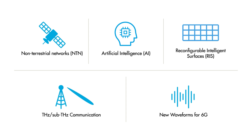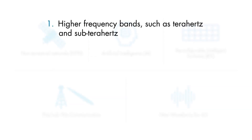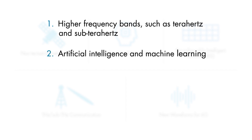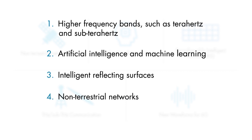To enable all these applications, 6G will use several enabling technologies including higher frequency bands such as sub-terahertz, artificial intelligence and machine learning, intelligent reflecting surfaces, non-terrestrial networks, and joint communication and sensing.